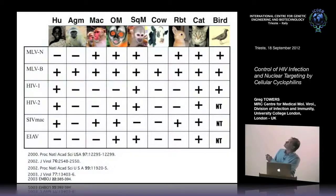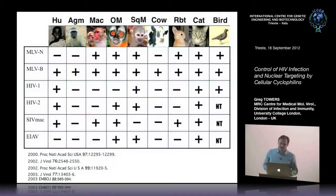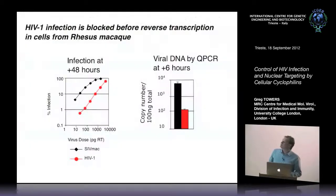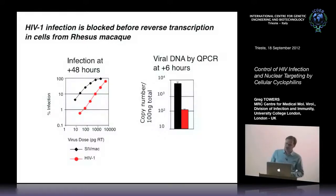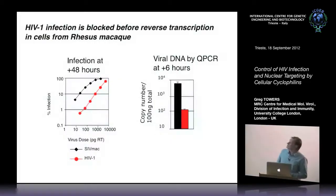Some viruses can infect all cells at high titer, and cats and dogs serve as good controls being highly infected by all viruses. Famously, HIV-1 is very poorly infectious on old world monkey species; HIV-2, EIAV, and NMLV do very badly in human cells. In virtually all cases, we could show that the block to infection was due to a block to reverse transcription. HIV carries an RNA genome which it converts to DNA by reverse transcription, and that was the part of the life cycle being inhibited - for example, SIV MAC is much more infectious than HIV-1 in simian cells.